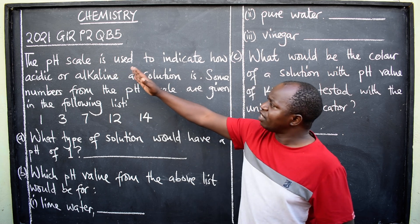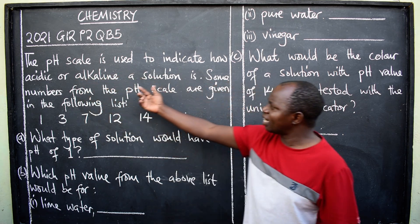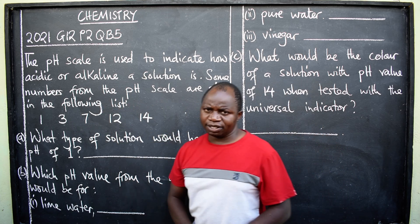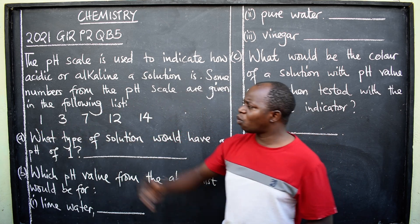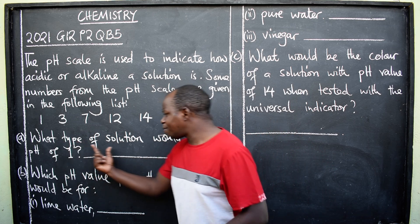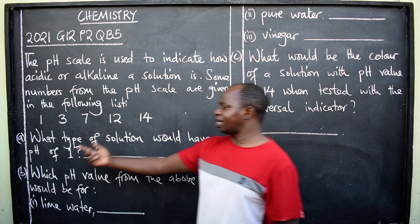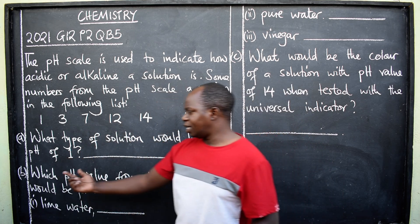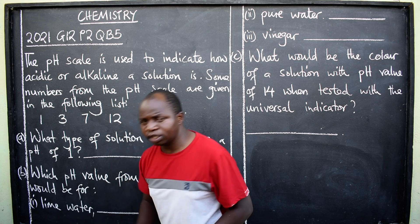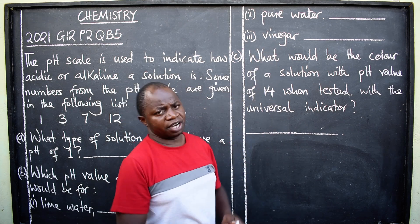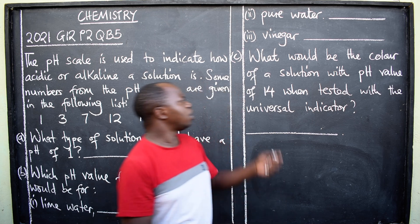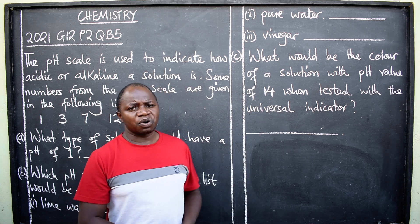The pH scale is used to indicate how acidic or alkaline a solution is. Some numbers from the pH scale are given in the following list: 1, 3, 7, 12, and 14. Part A: What type of solution would have a pH of 1? Part B: Which pH value from the above list would be for — roman numeral 1, lime water; 2, pure water; 3, vinegar? Part C: What would be the color of a solution with pH value of 14 when tested with the universal indicator?